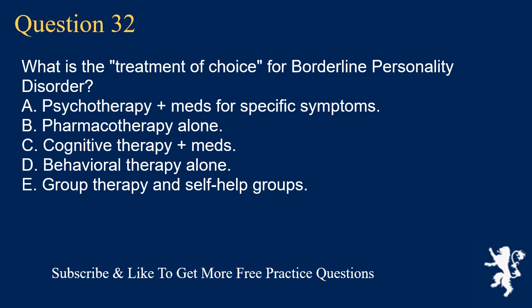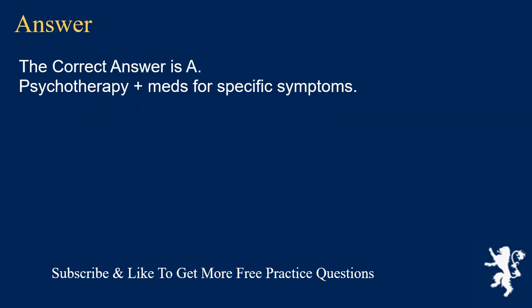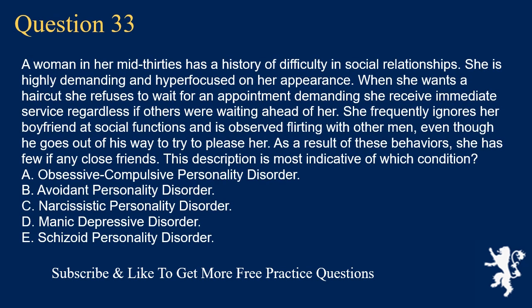Question 32. What is the treatment of choice for Borderline Personality Disorder? A. Psychotherapy plus meds for specific symptoms. B. Pharmacotherapy alone. C. Cognitive Therapy plus meds. D. Behavioral Therapy alone. E. Group Therapy and Self-Help Groups. The correct answer is A. Psychotherapy plus meds for specific symptoms.